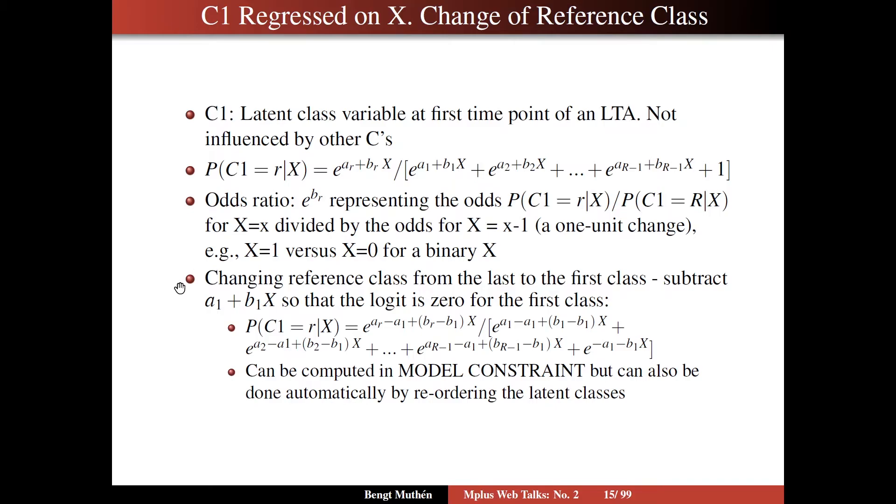Now very often, as we will see, it's useful to change the reference class from the last class to the first class or some other class. To do that, to change it from the last to the first, you subtract the logit for the first class so that the logit becomes zero for the first class. So for a particular category r, you subtract from the intercept a1 and subtract from the slope b1. You do that throughout like that. That's how you change the reference class. Now this is, of course, not something you want to do by hand. It can be computed in the Mplus model constraint command. But it also can be done automatically by reordering the latent classes as is now easily done in Mplus since version 8.5.